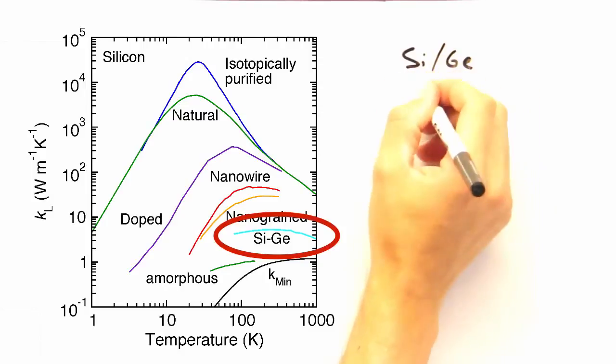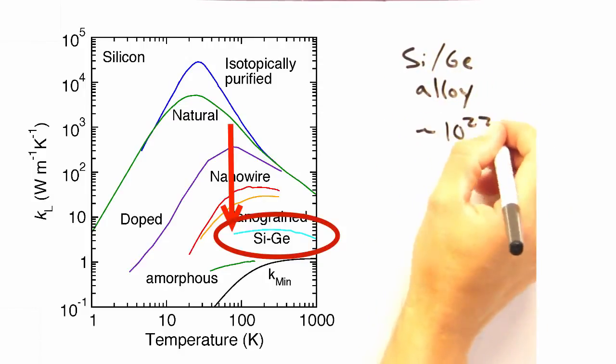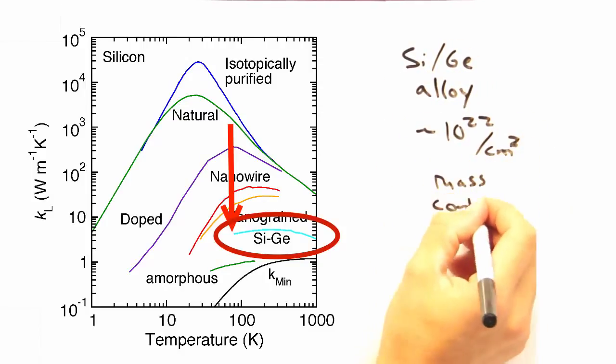Good. And we can say the same for the silicon-germanium alloy, except in this case, the doping is about five orders of magnitude higher.